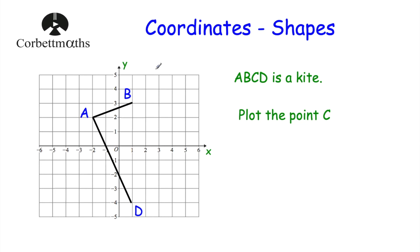Okay, let's have a look at another question. This time we've got a grid and we've got the points A, B, and D, and we're told that A, B, C, D is a kite. Remember, a kite is a quadrilateral — a four-sided shape — and it's got one line of symmetry. We've been asked to plot the point C, the fourth vertex of this kite.